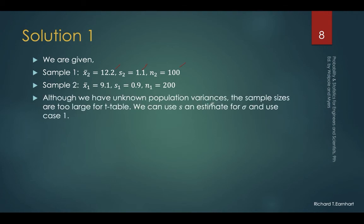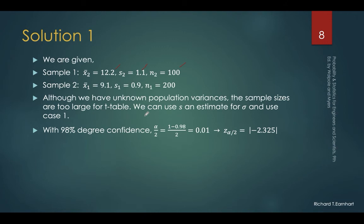Compute a 98% confidence interval estimate for the difference between the population means. Although we have unknown population variances here, the sample sizes are large enough, so we can use S as an estimate of sigma and apply Case 1. We are given for sample 1 the sample mean, standard deviation of 1.1, and sample size of 100; for sample 2, the sample mean of 9.1, standard deviation of 0.9, and sample size of 200.